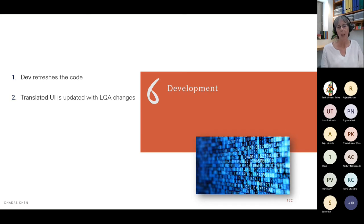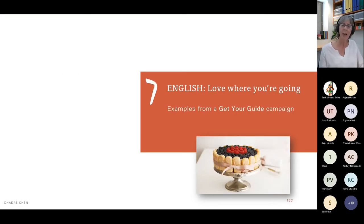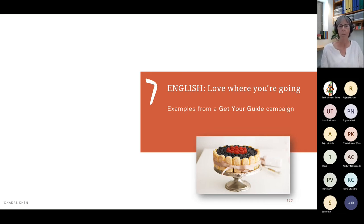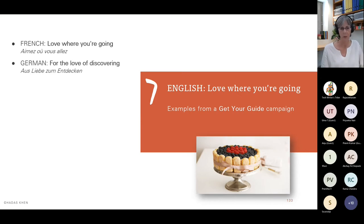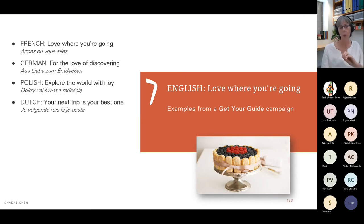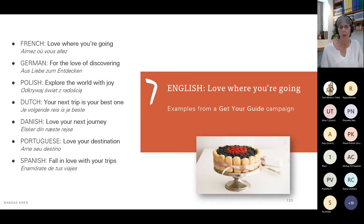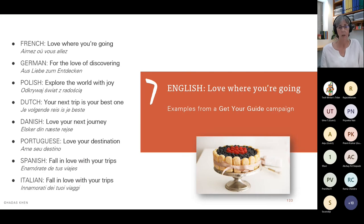Which brings us to the final step — the icing on the cake. As one example, Get Your Guide did a campaign where the term was 'love where you're going,' translated into seven or eight languages. French was the only word-for-word translation; all the rest needed to be adapted in terms of translation and localization — everything from 'for the love of discovering' to 'fall in love with your trips.' But each one was successful in its own way.